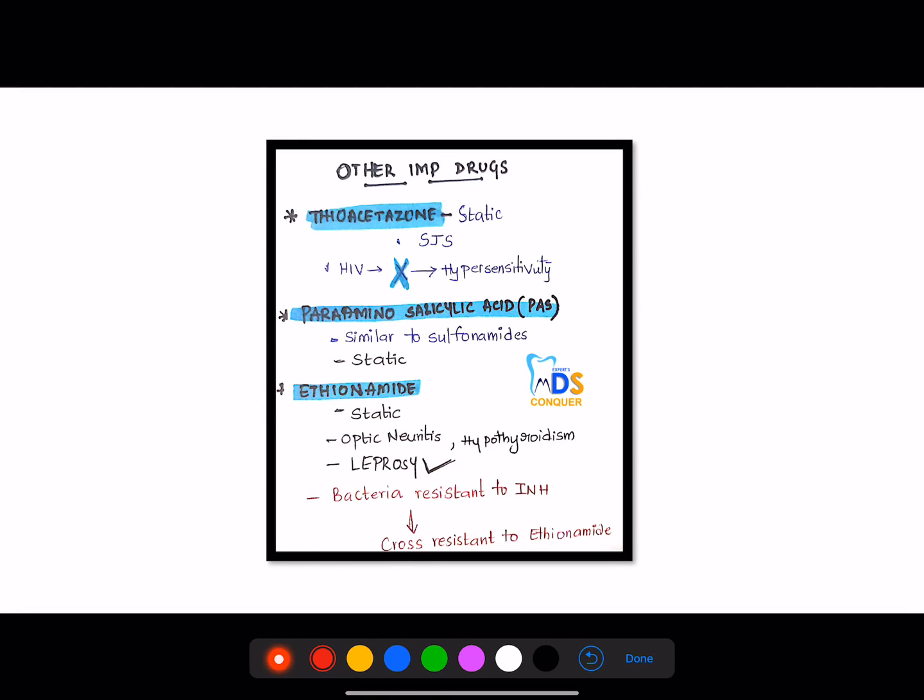There are few other important drugs like thioacetazone, which is a static drug, and it can cause Stevens-Johnson syndrome. And this is not used in HIV because it causes hypersensitivity. There is another drug, para-aminosalicylic acid. It is static, which has similar action to sulfonamides. Then coming to ethionamide. It is static, and it can cause optic neuritis, hypothyroidism which is very important, and it can be used in leprosy. And here bacteria which are resistant to isoniazid can also cross-resist to this ethionamide.